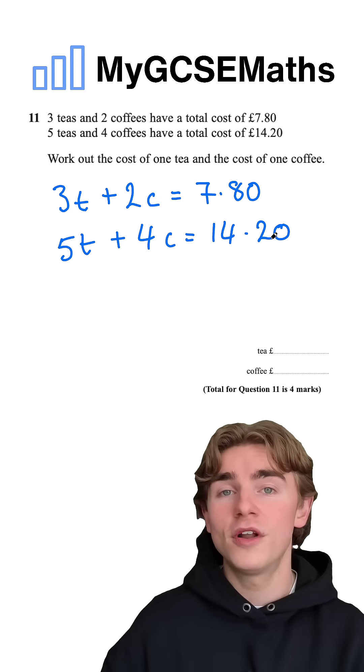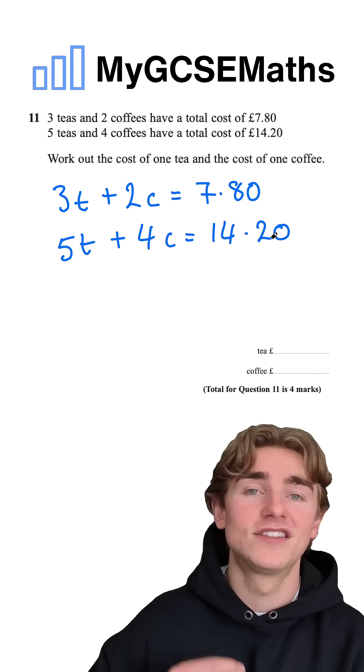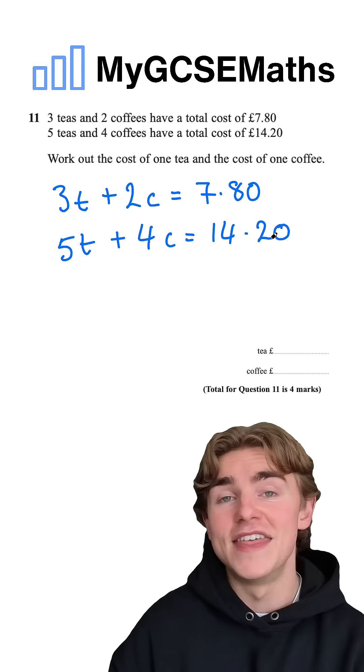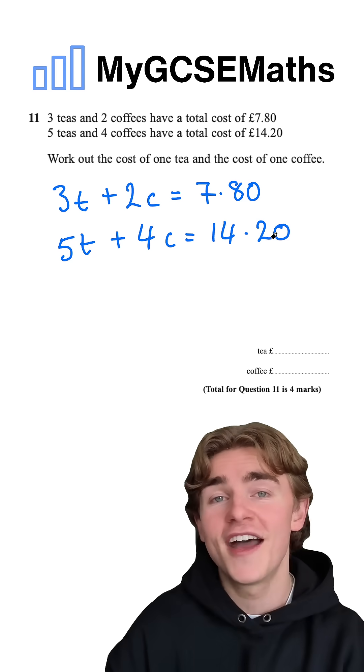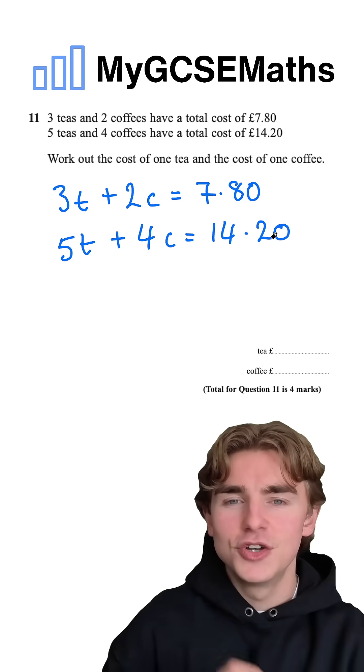The next step, we're going to multiply one of our equations by something to get a match next to one of our variables. Then we can subtract one equation from the other and it's going to cancel that out. Let me show you what I mean.